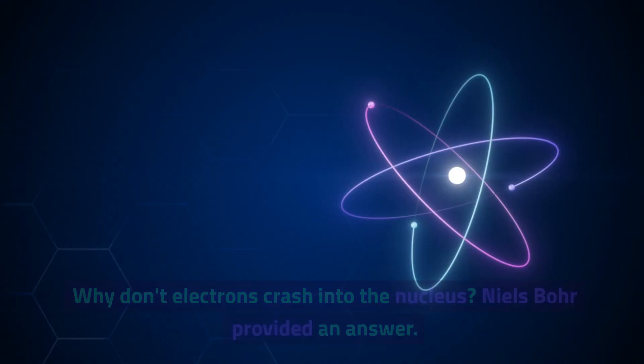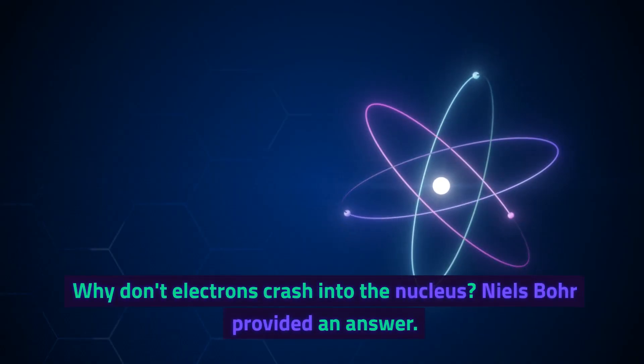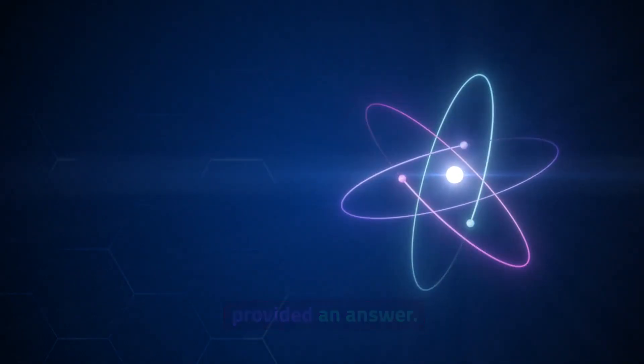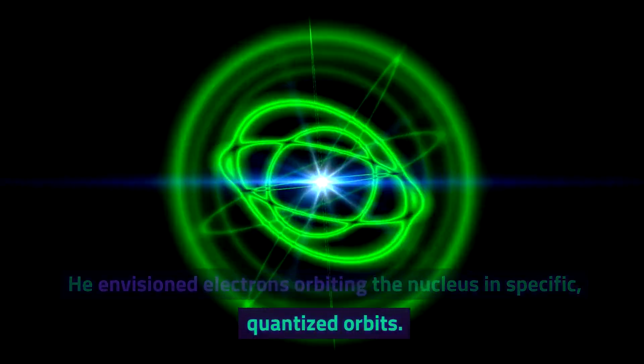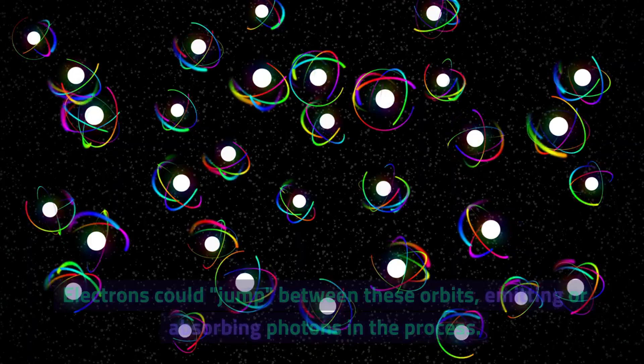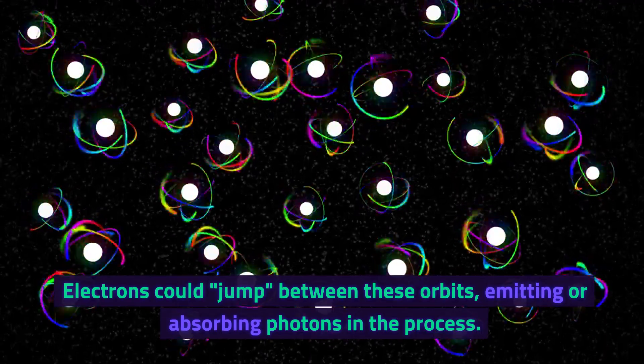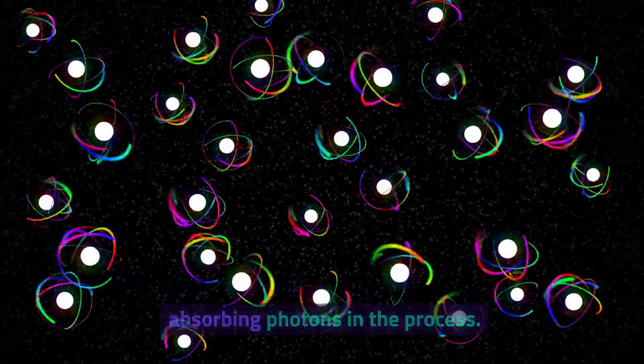The atom was a puzzle. Why don't electrons crash into the nucleus? Niels Bohr provided an answer. He envisioned electrons orbiting the nucleus in specific quantized orbits. Electrons could jump between these orbits, emitting or absorbing photons in the process.